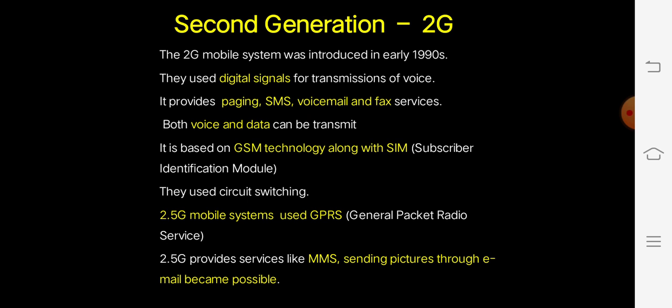2G provides paging, emailing, SMS, voicemail, and fax services. Both voice and data can be transmitted — data being a file or written/typed document. It is based on GSM technology along with the SIM, which stands for Subscriber Identification Module. Each SIM has a unique identification number, and 2G used circuit switching.